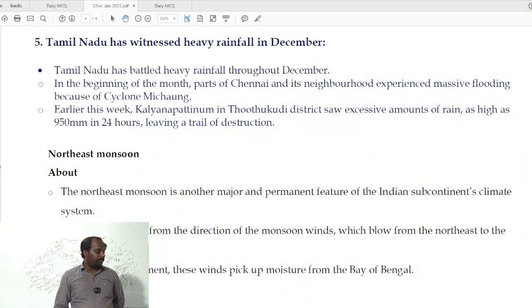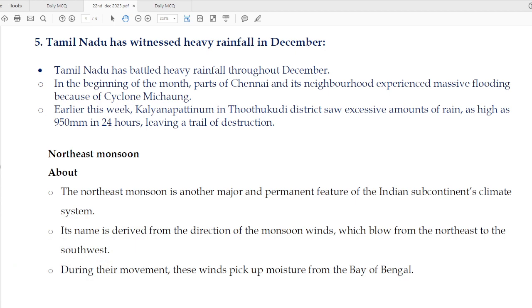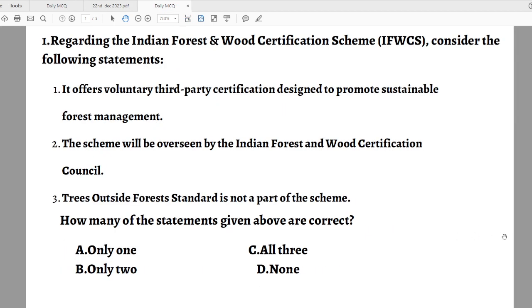That's all about the current affairs. Now we will move on to the MCQ. Question number one regarding the Indian Forest and Wood Certification Scheme: Consider the following statements. Statement 1: It offers voluntary third-party certification designed to promote sustainable forest management. Statement 2: The scheme will be overseen by the Indian Forest and Wood Certification Council. Statement 3: Outside forest standards is not a part of the scheme. How many of the statements given above are correct?